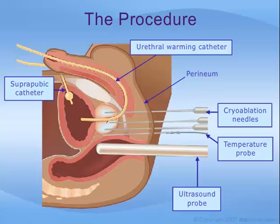Finally, as shown here, a second catheter called a suprapubic catheter is placed into the bladder through the skin of the lower abdomen. This will act as a safety mechanism to provide bladder drainage in case there are difficulties urinating after the procedure.